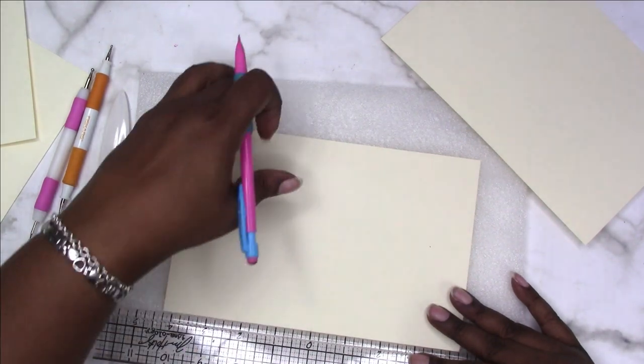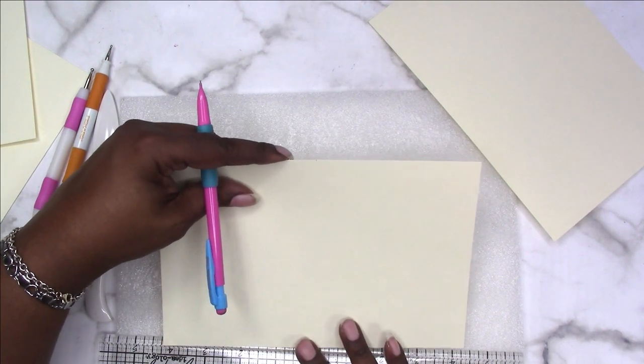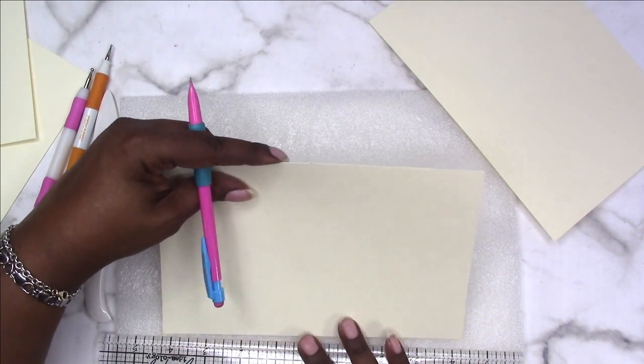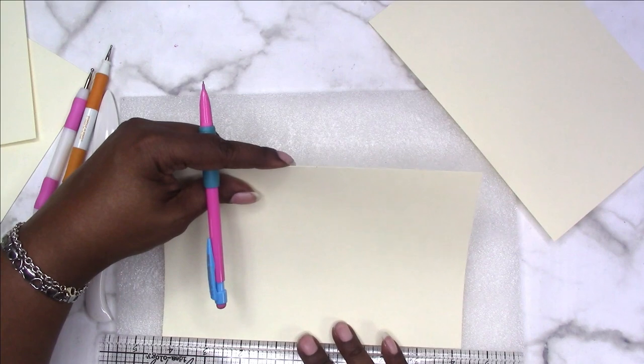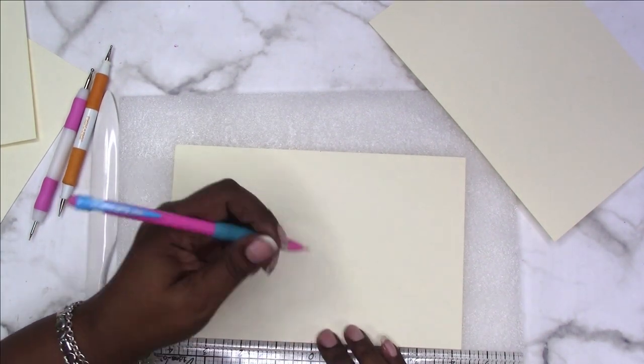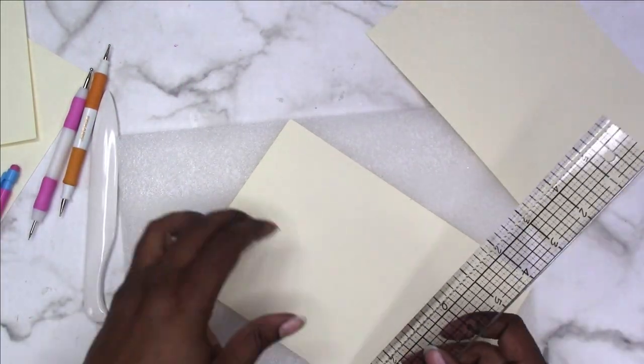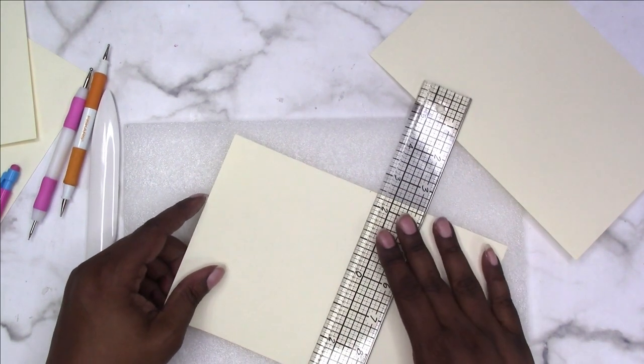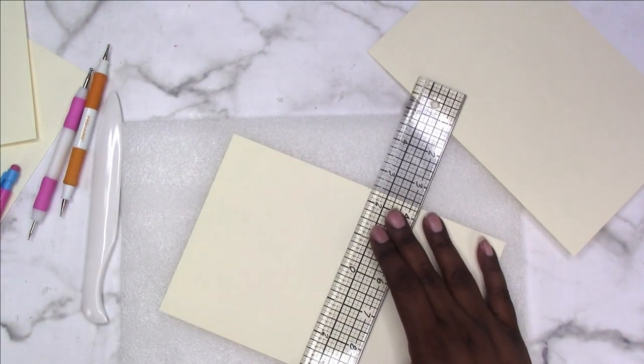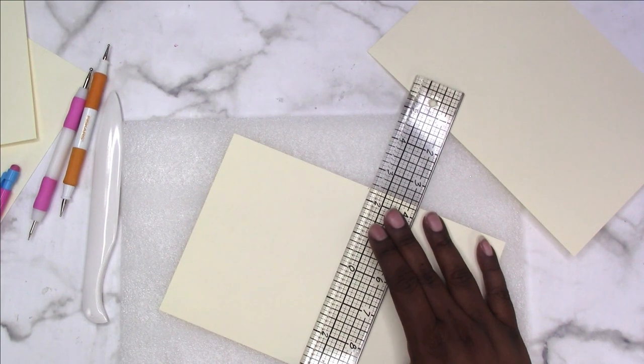I'm going to mark here, flip this around, find the center because that's where I'm going to score, and mark there. Now I have my two marks. I'm just going to take my ruler with the beveled edge and place it on my cardstock, lining it up with my two tick marks.